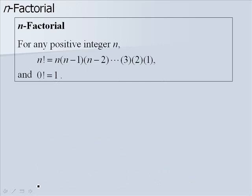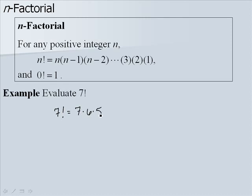Here's a definition for a factorial. For any positive integer n, n factorial is equal to n times n minus 1 times n minus 2, all the way down to 1. And 0 factorial is equal to 1. So we want to evaluate 7 factorial. 7 factorial would be 7 multiplied by every consecutive number down to 1: 7 times 6 times 5 times 4 times 3 times 2 times 1. Multiplying that all out, we get 5040.